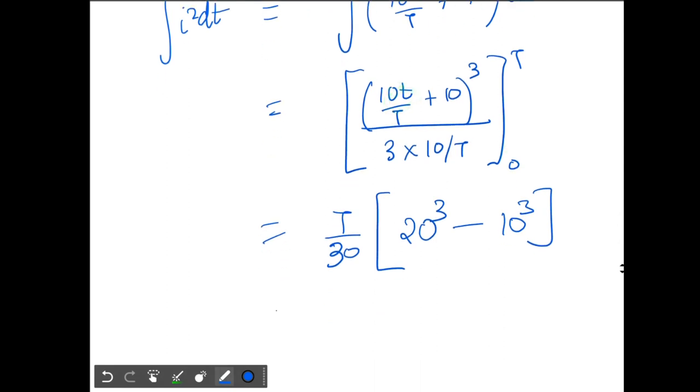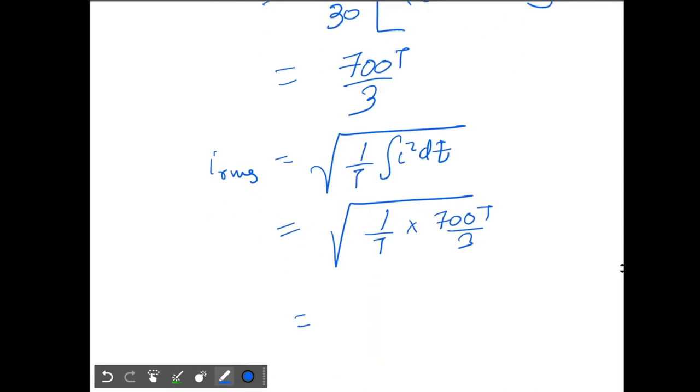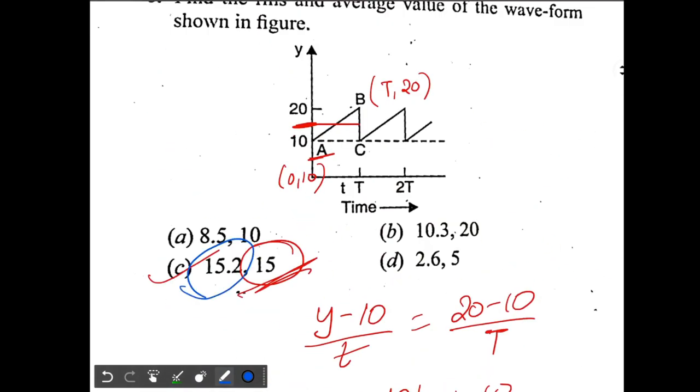This equals 7000 by 10, that's 700T by 3. Now i RMS will be root of 1 by T integration i squared dt, so that's equal to root of 1 by T into 700T by 3. This will be equal to 10 root 7 by 3 ampere. Let's calculate - you'll get this to be equal to 15.2 ampere. So that's what we have over here: 15.2 amperes.